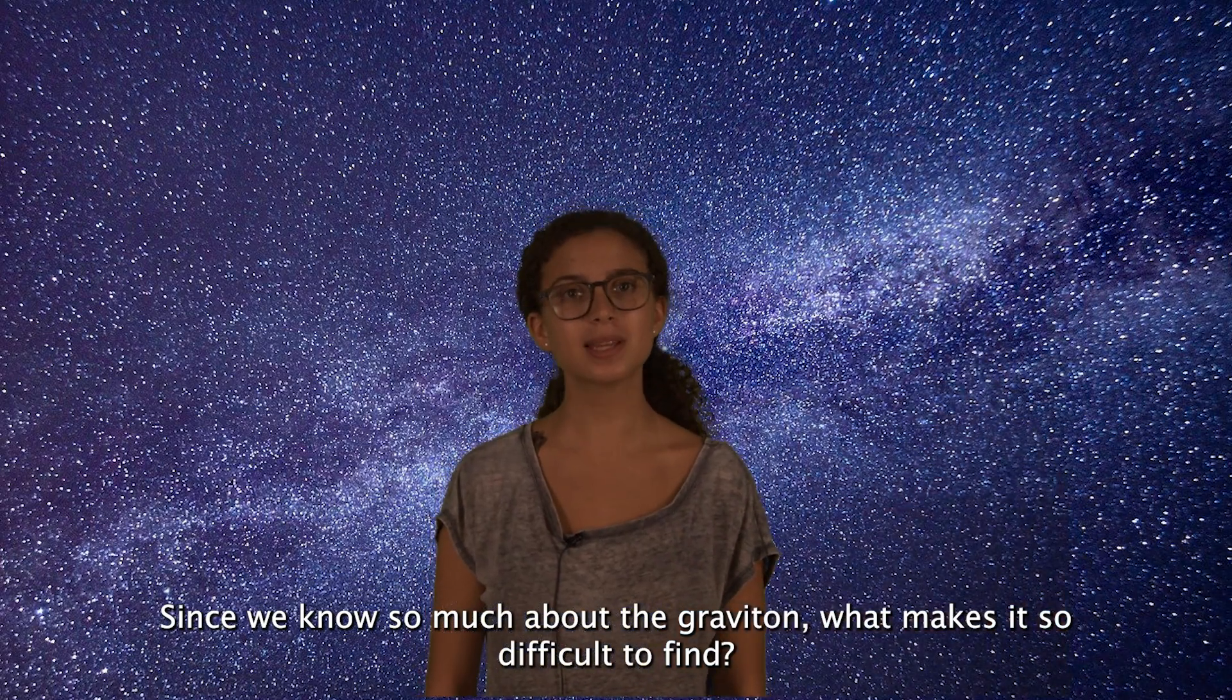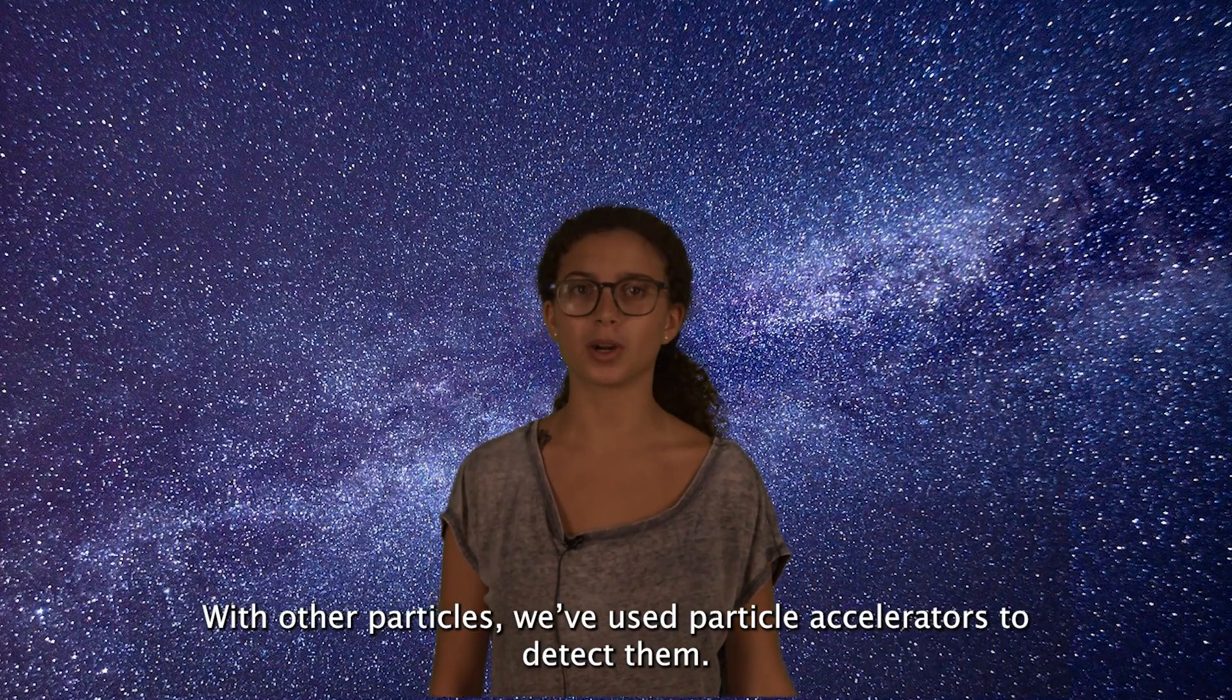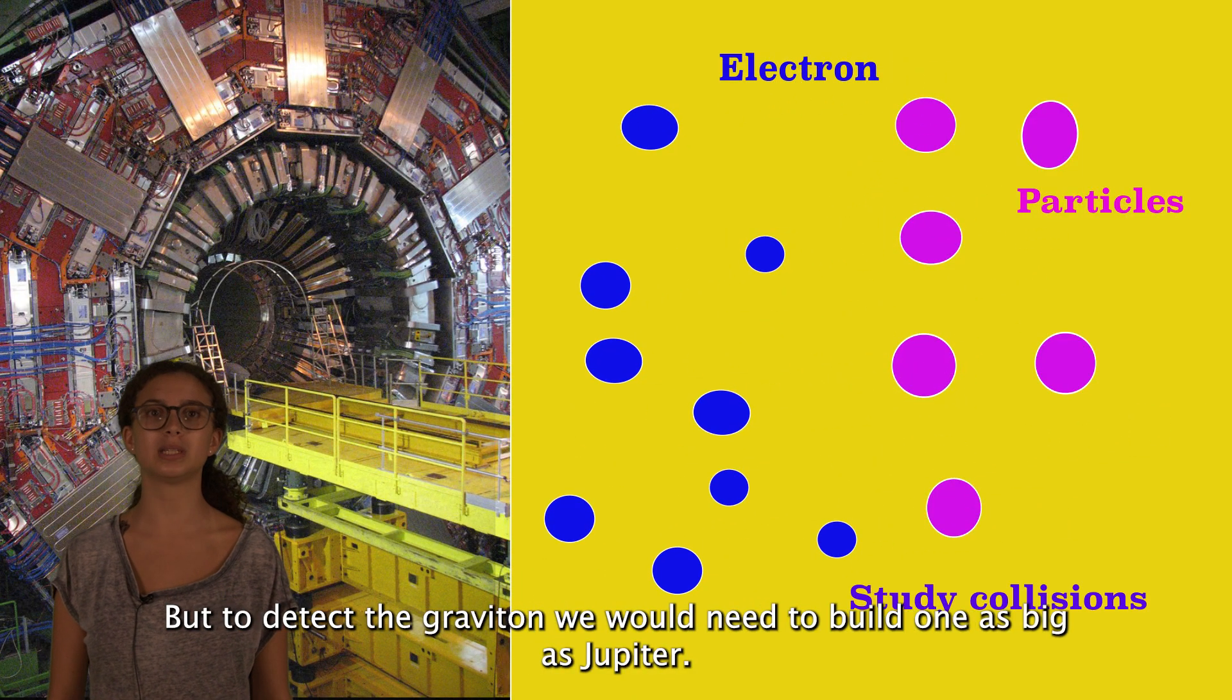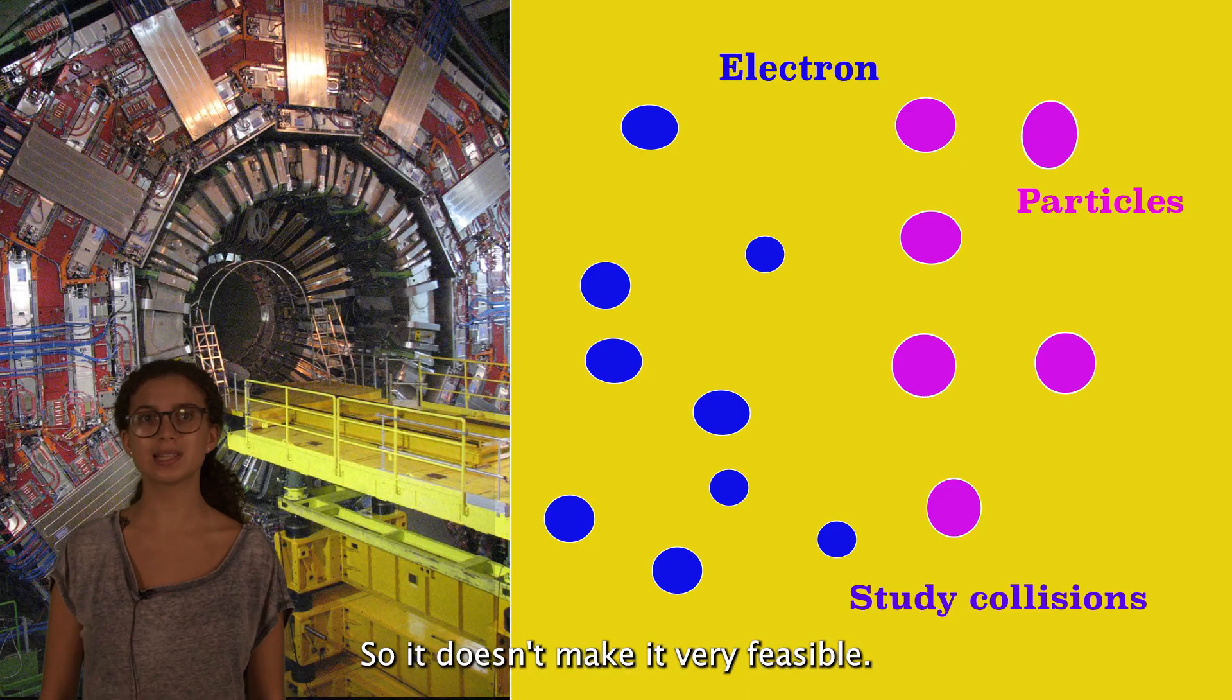Since we know so much about the graviton, what makes it so difficult to find? With other particles, we've used particle accelerators to detect them, but to detect the graviton, we would need to build one as big as Jupiter, so it doesn't make it very feasible.